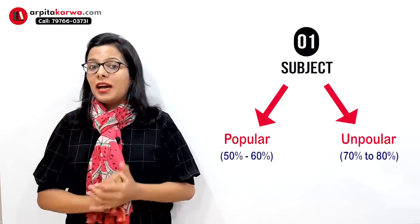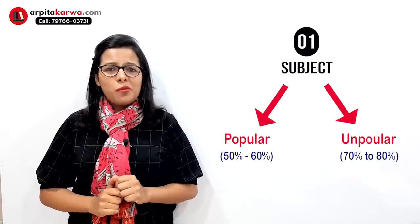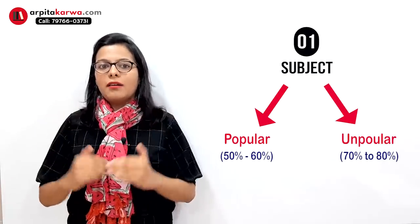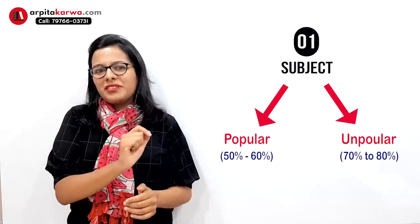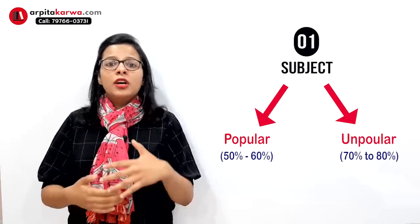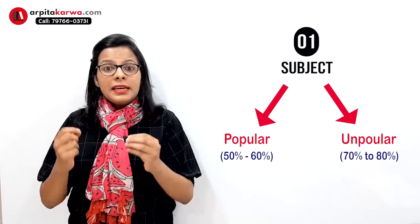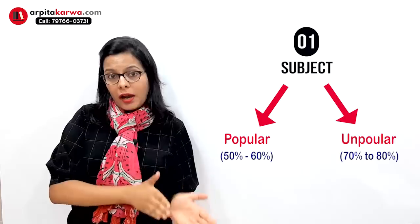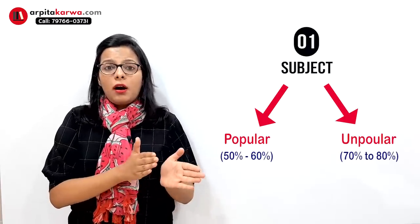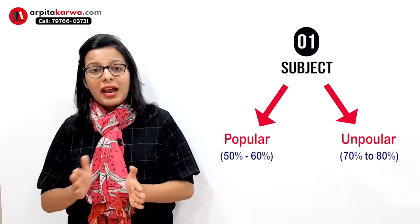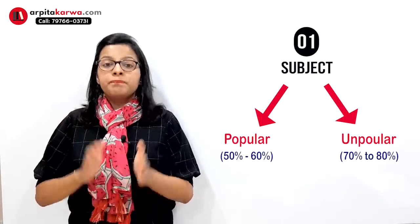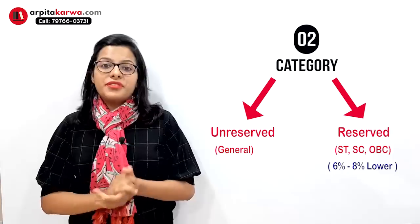If you are in the unpopular subject category, you need to raise your bar higher. Unpopular subjects like Sanskrit, Yoga, and Dance have a cutoff of around 70 to 80 percent. So find out whether your subject falls in the popular category (50–60% cutoff) or the unpopular category (70–80% cutoff).